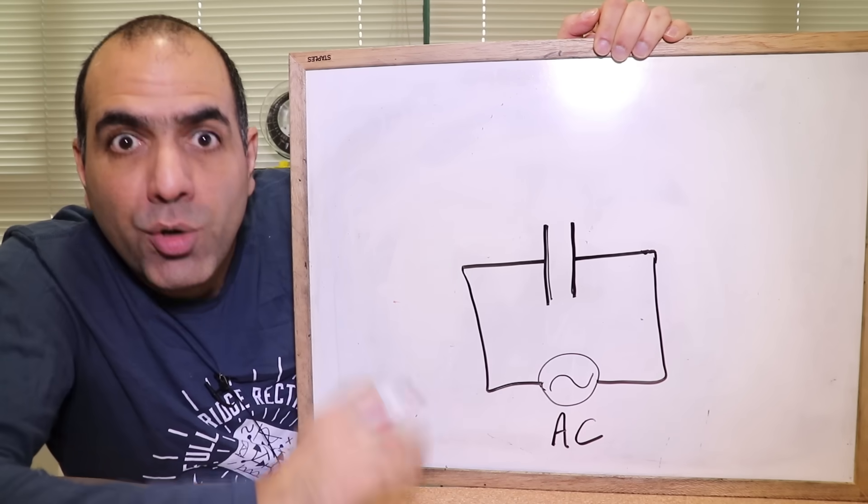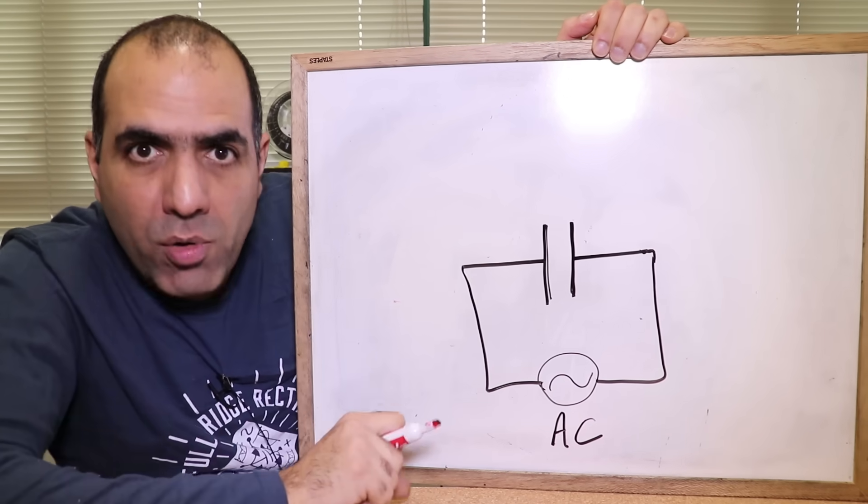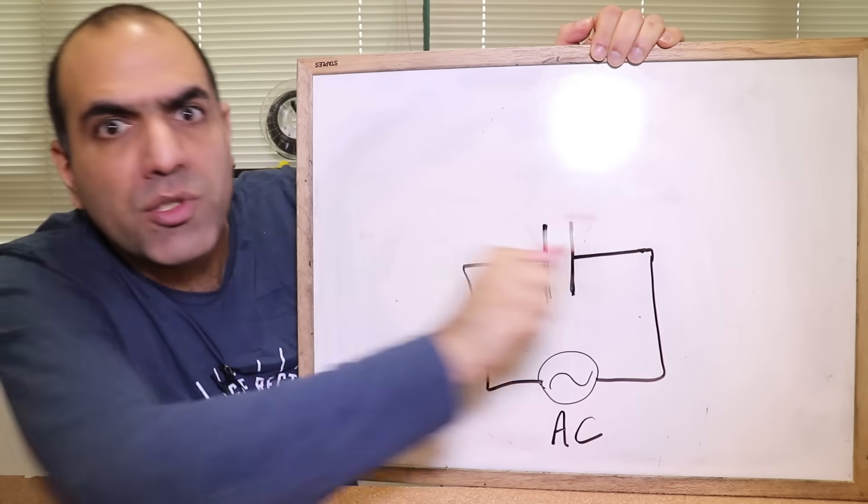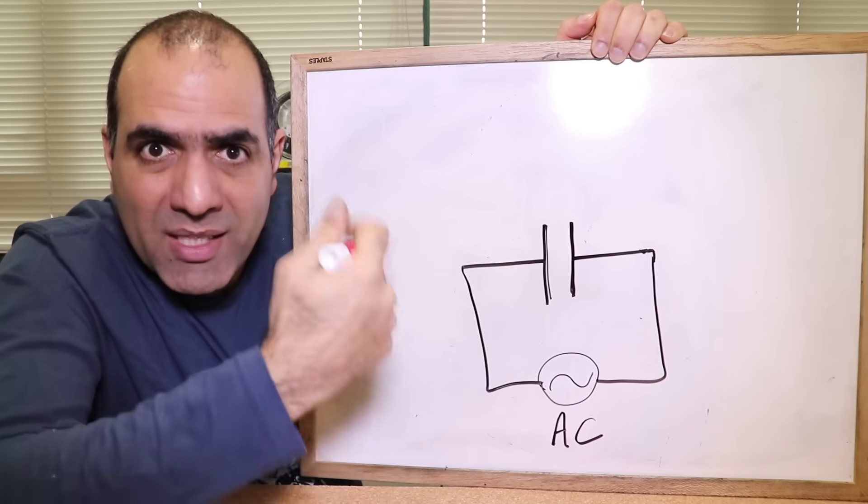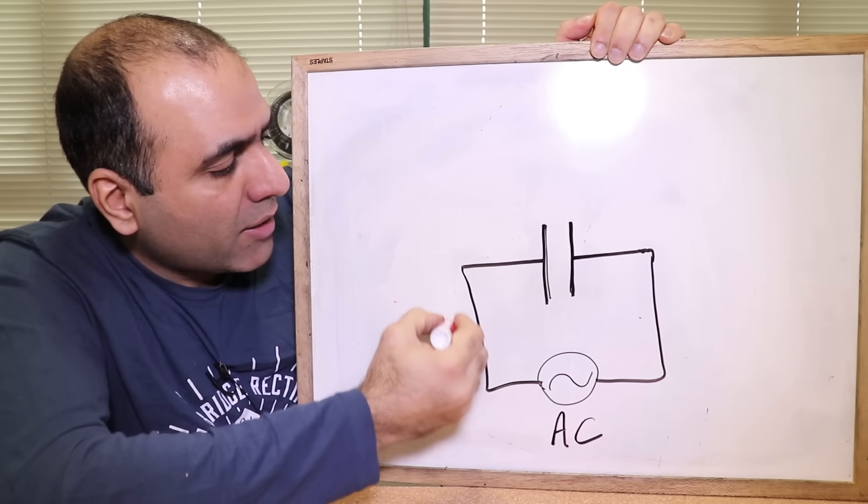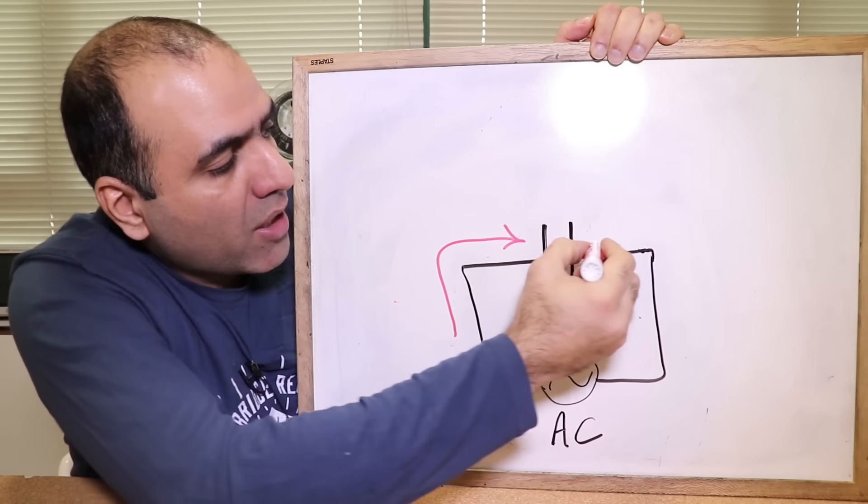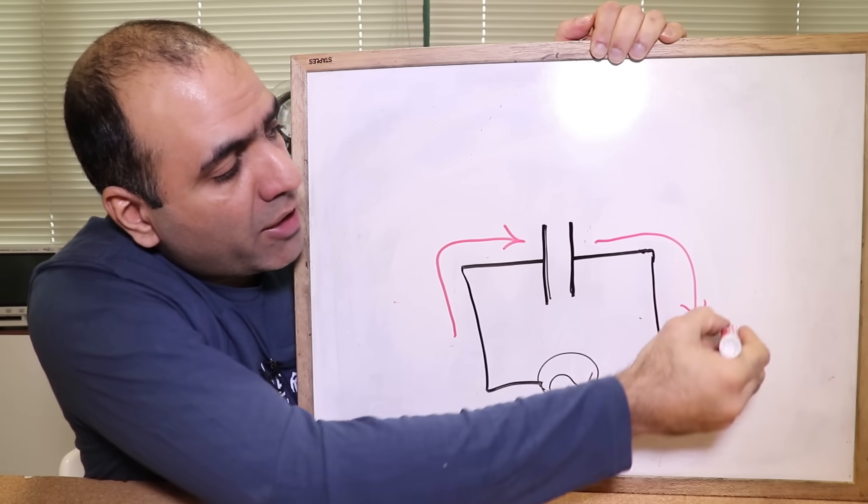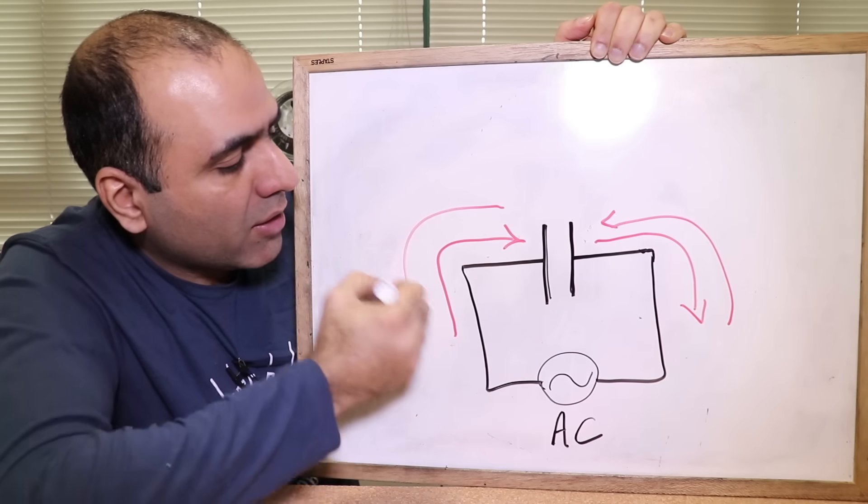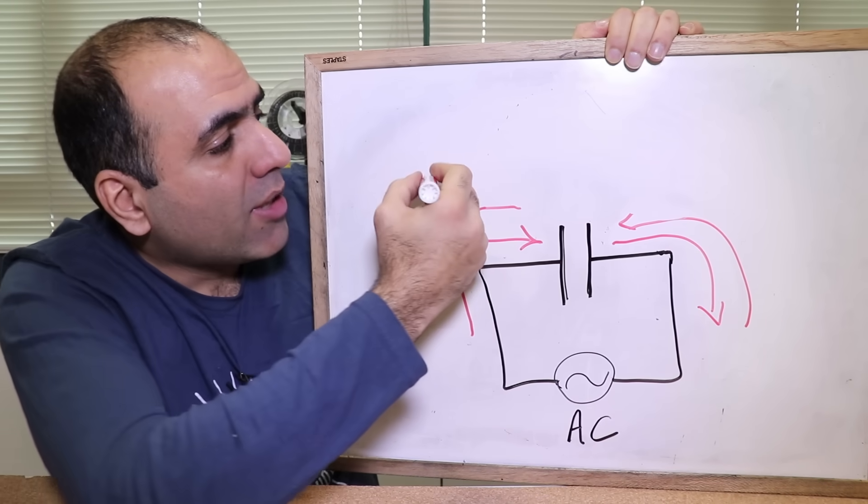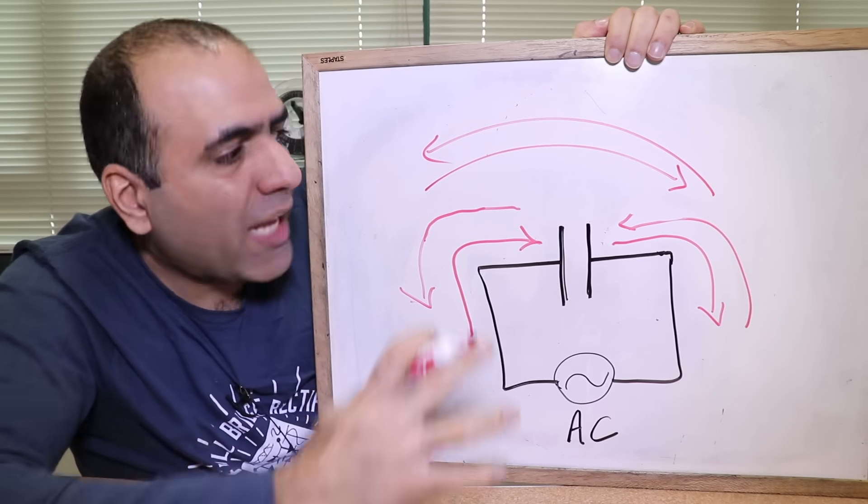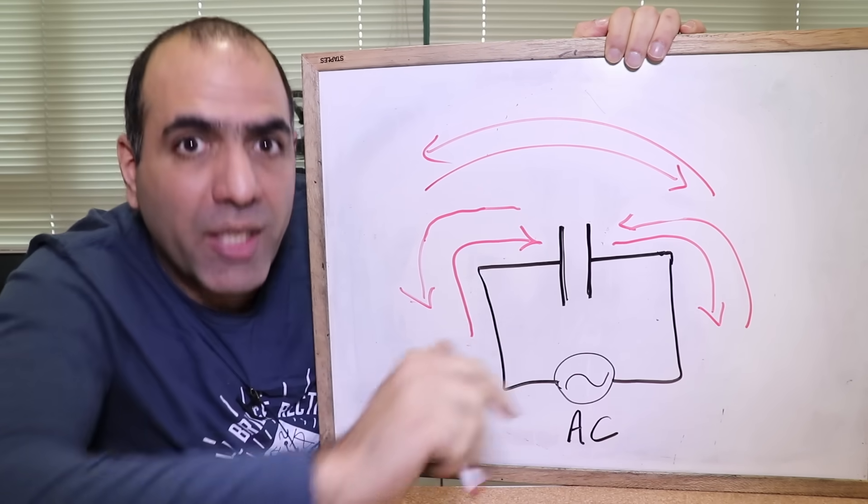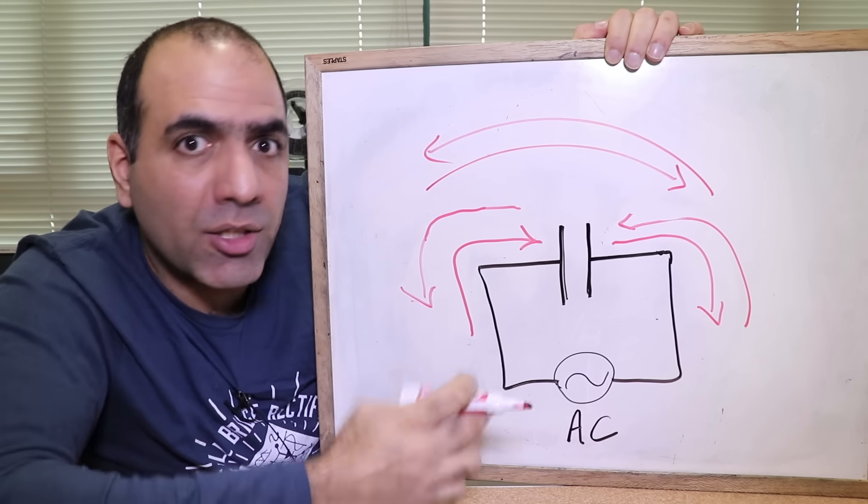But when you have AC, you constantly raise and lower the voltage, which pushes and pulls the charges in and out of the capacitor. So if you look at your capacitor as a black box, it looks like that the electric current goes in one side and out of the other side, then returns in the next cycle. So from outside, it looks like an AC current is passing through the component, although the actual charges never pass through the capacitor and only accumulate on the plates.